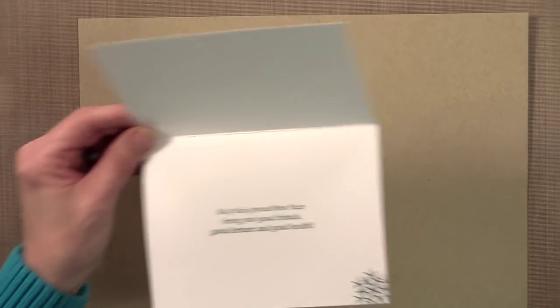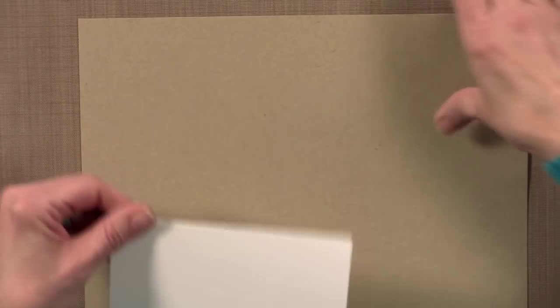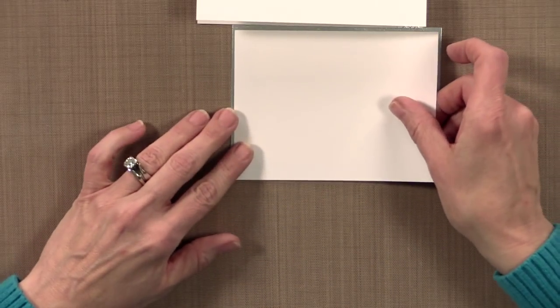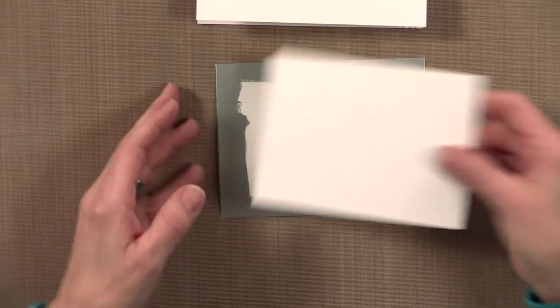So let's assemble this card. My first step is going to be to take this piece, and I have a smaller piece of white here. But to me, I feel like this white needs a little bit of something. So I'm going to grab my score buddy.